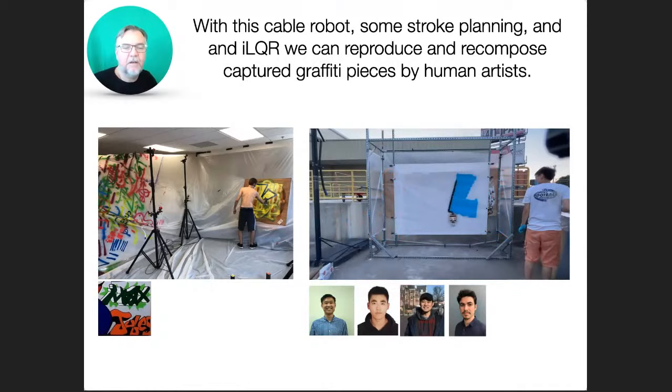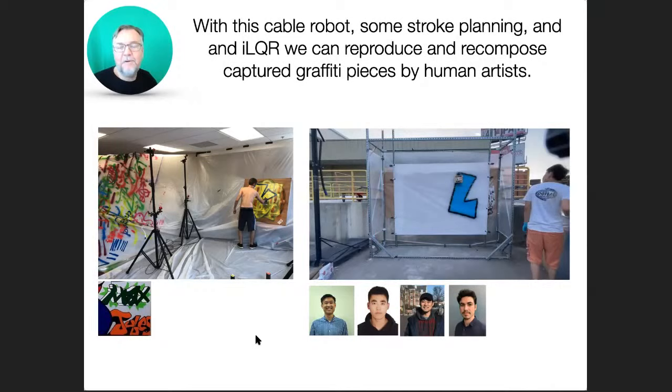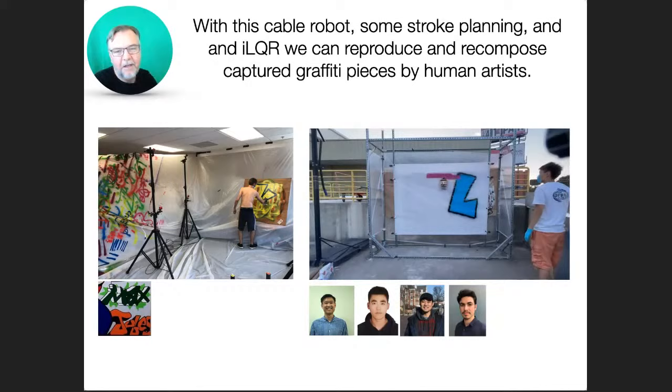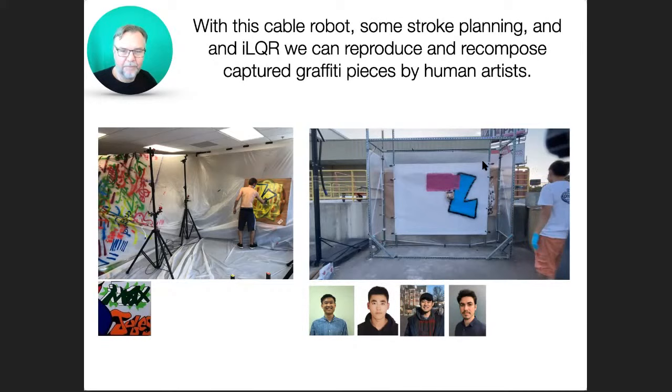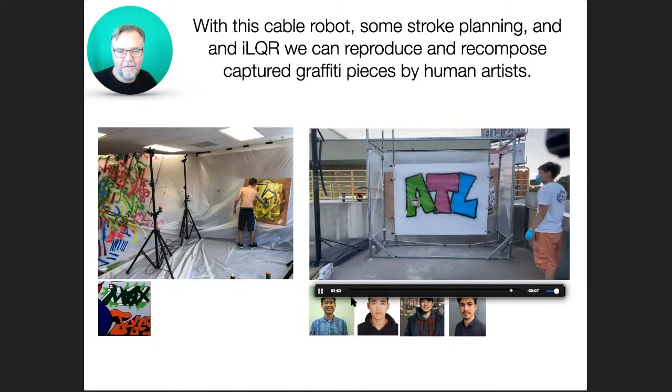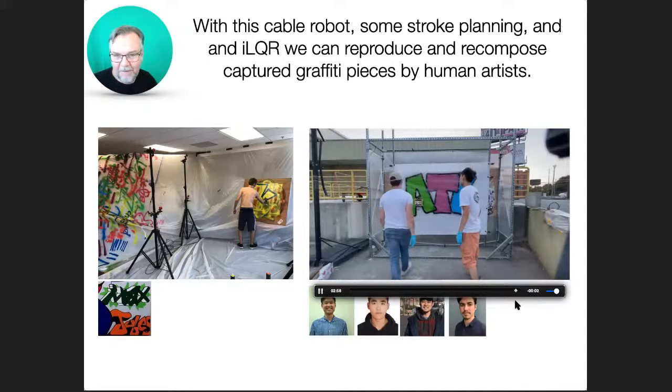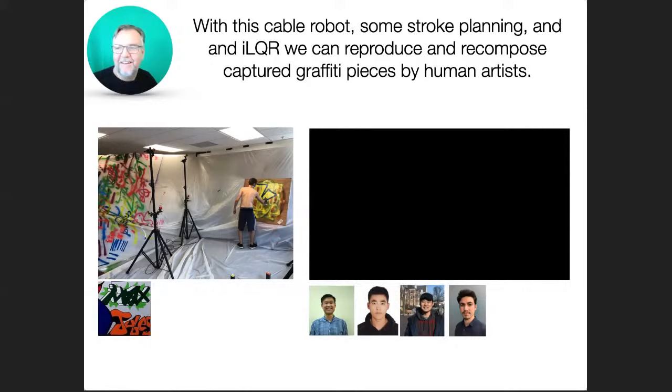And then with a great team of students at Georgia Tech, we built a software, including the iterative LQR factor graph, to replicate and recompose these graffiti letters in different combinations. And so this is our graffiti robot in action. And I was surprised how difficult this was. So this is really a kudos to the students involved. Cable robots are tricky and difficult to make work. And so we're not there yet. But I'm sure we will get there in the end.